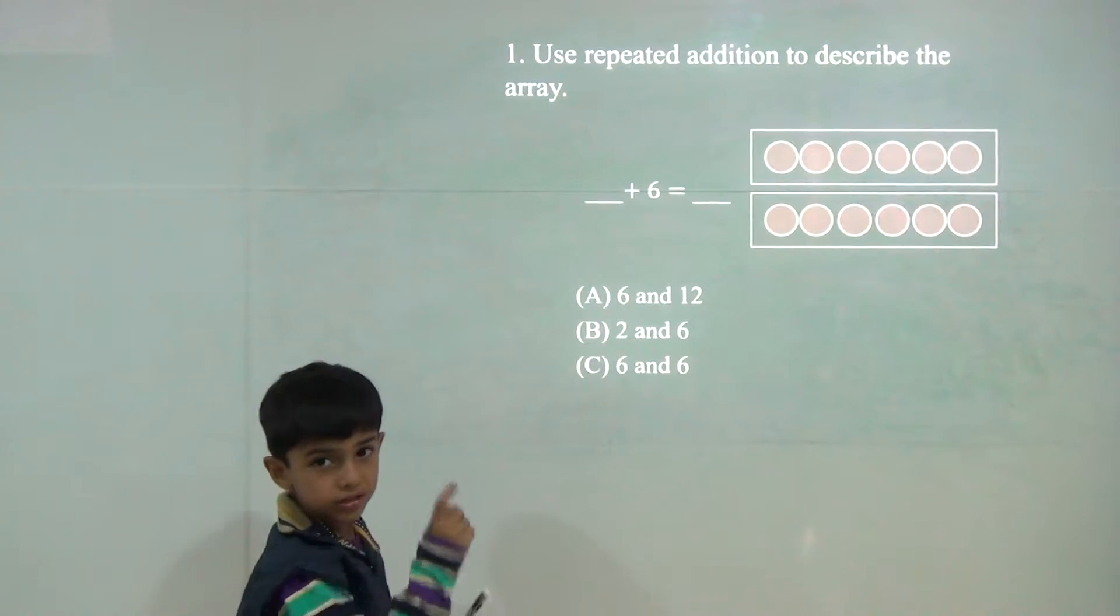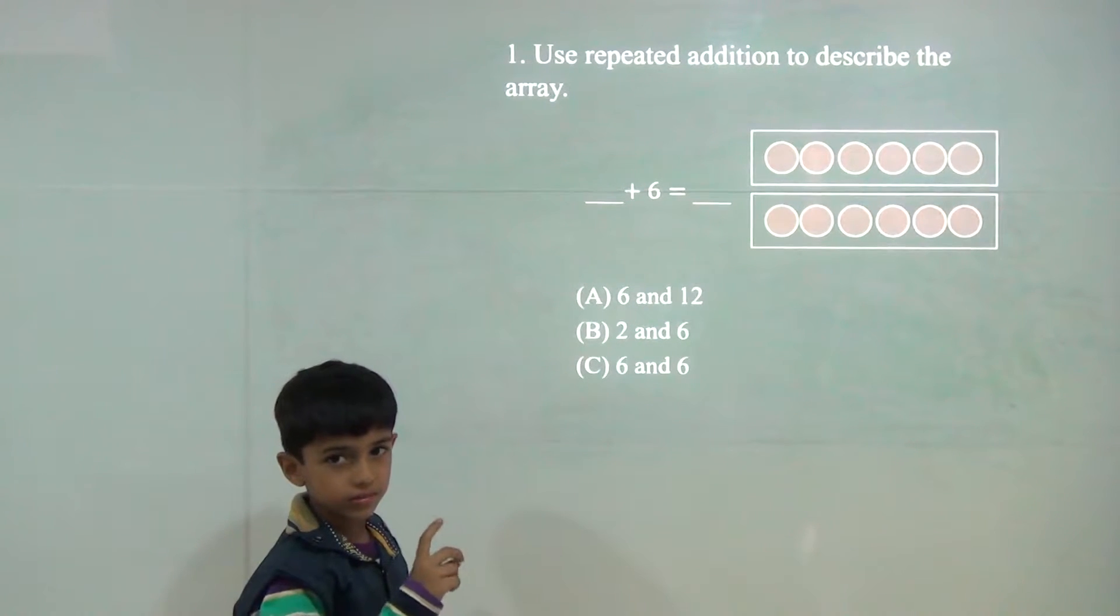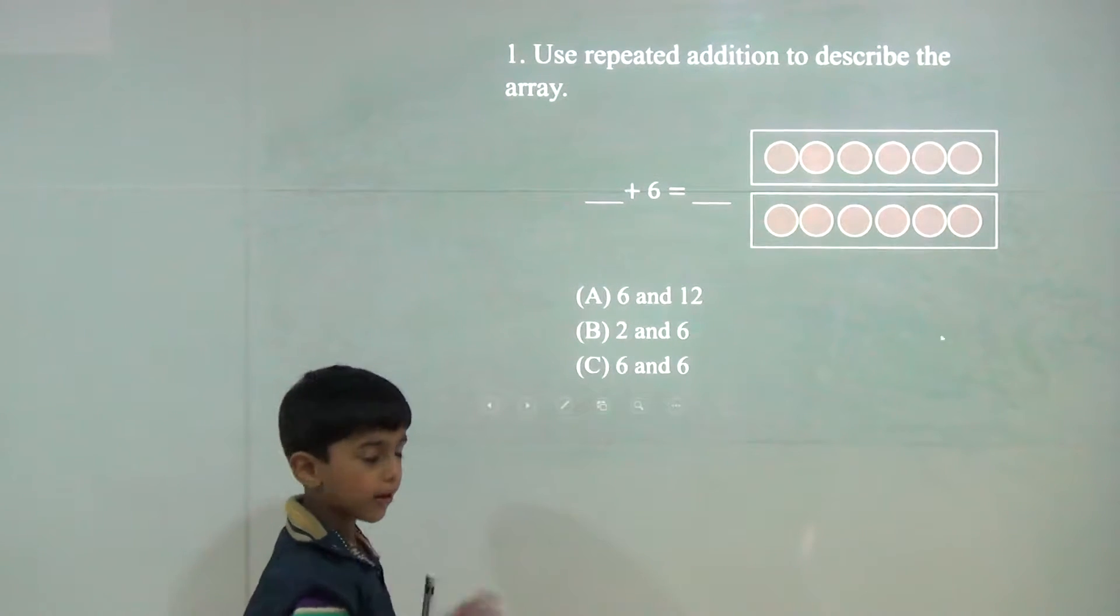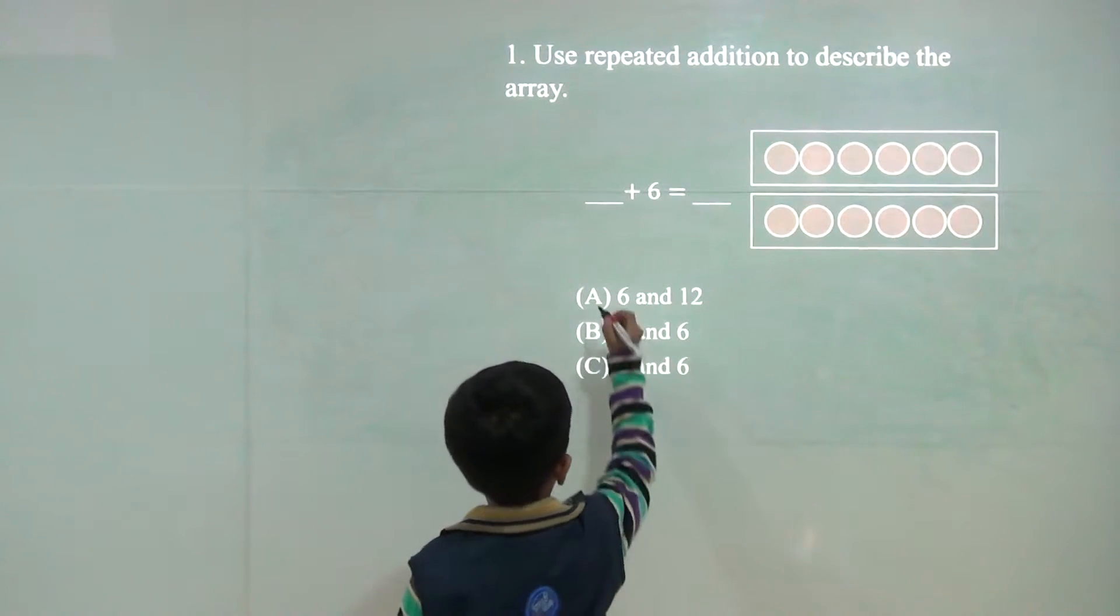Now 6 plus 6 would be 12. 6 to the 12. 5 would be 6 and 12.